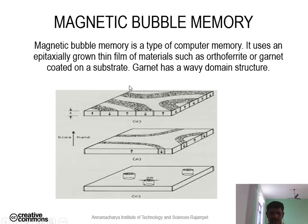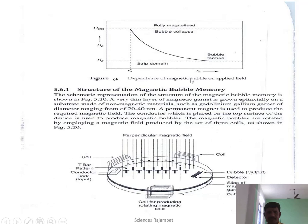Magnetic bubble memory is a type of computer memory. It uses an epitaxially grown thin film of materials such as orthoferrites and garnets coated on a substrate. Garnet has a wavy domain structure. For example, in this graph we are going to explain the relationship between the applied magnetic field and the shape of the bubble or magnetic strips.